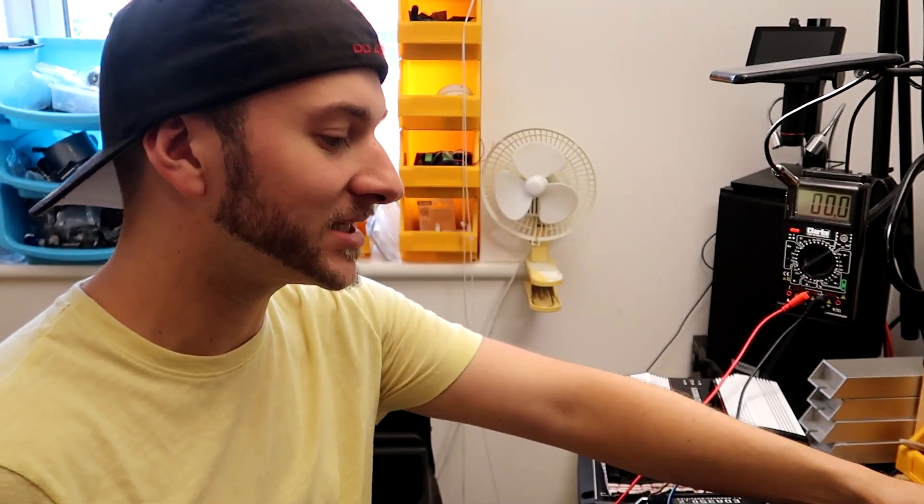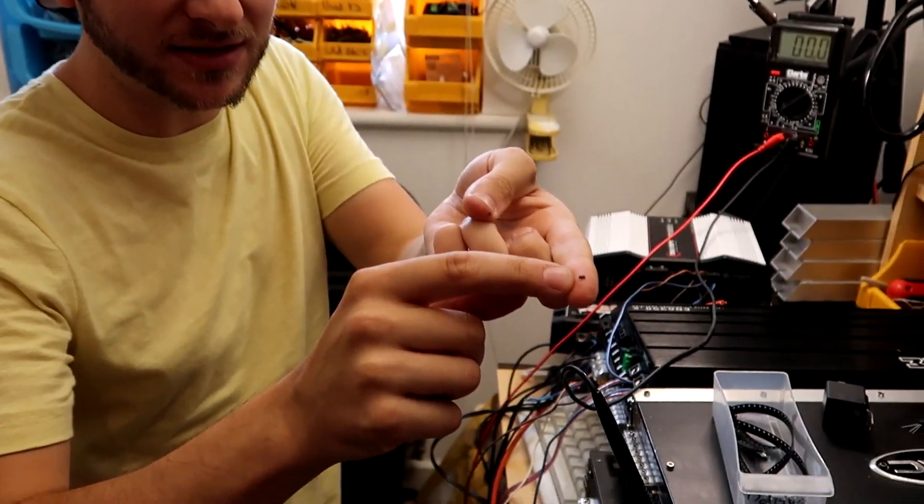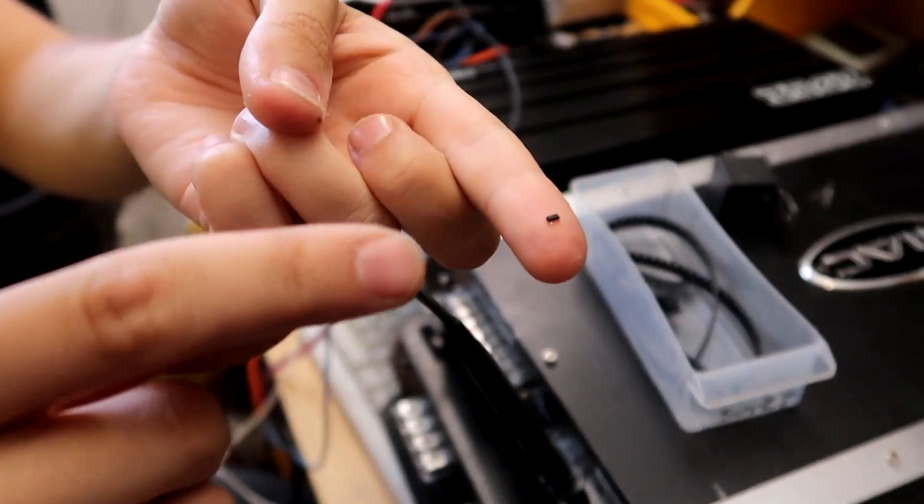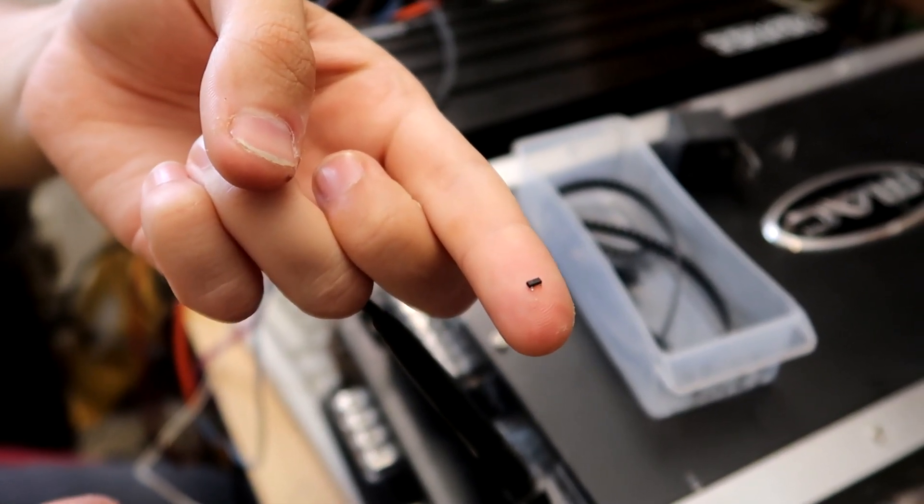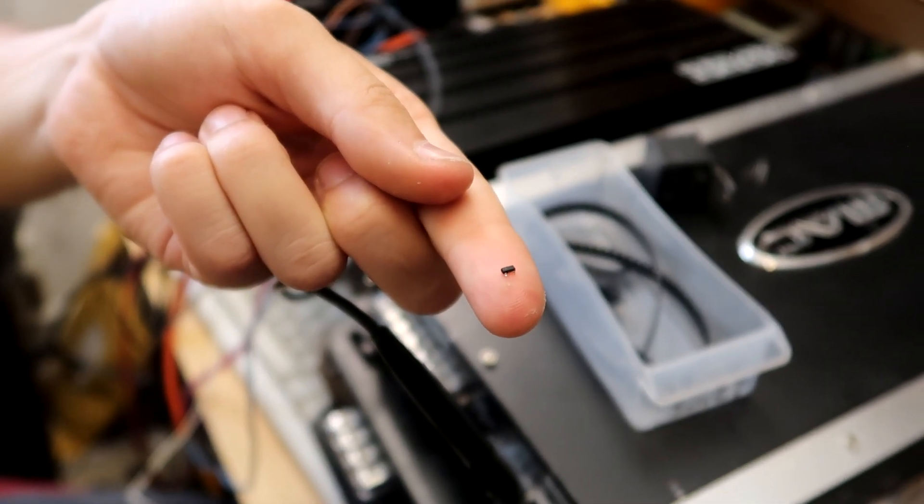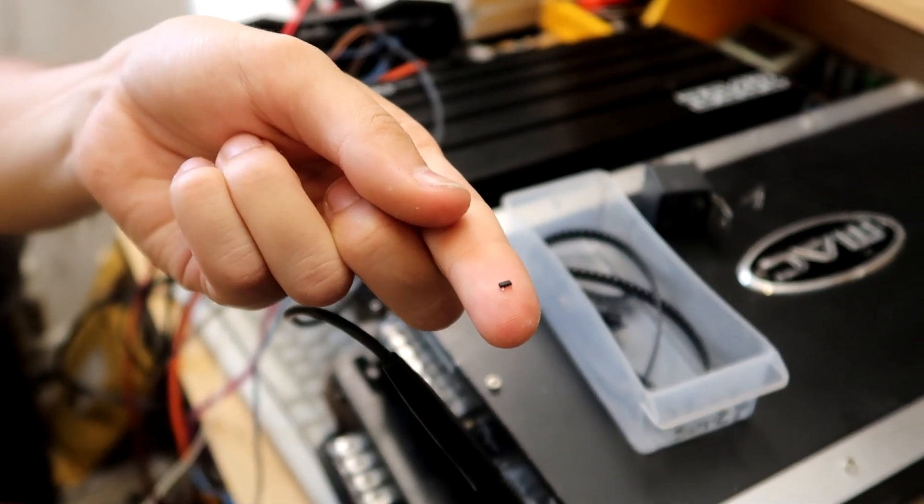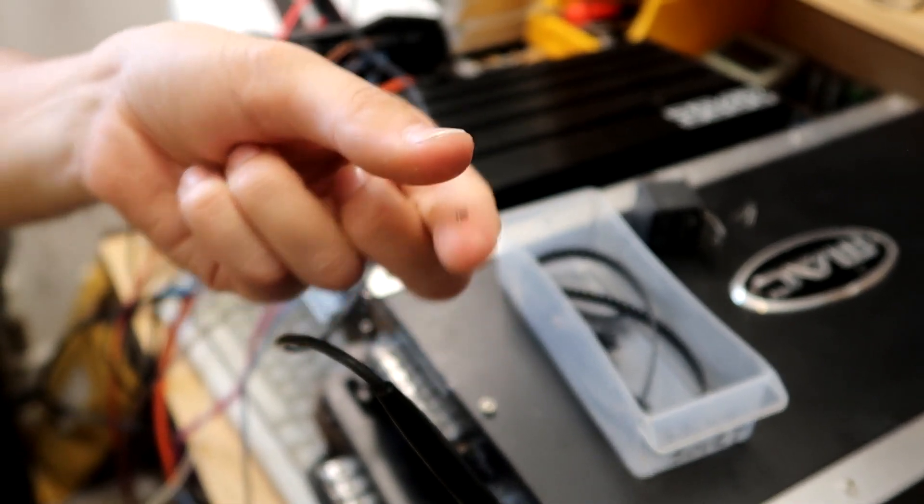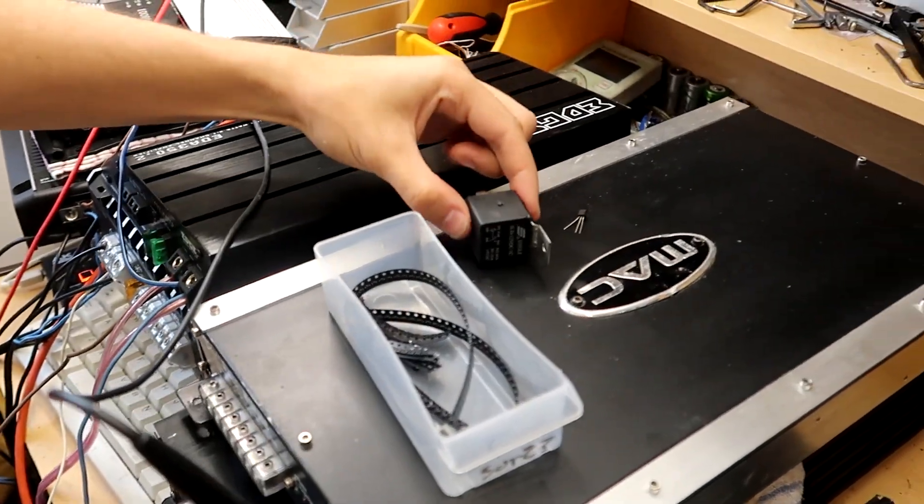Some of the amplifiers, the more modern ones, use surface mount parts and this is the size of the transistor that you're needing to energize. The camera probably won't focus on this because it's so small, but that's the size of the transistor you're needing to energize or pass current through in order to get the amplifier powered up. You can see the size difference between that and the relay.